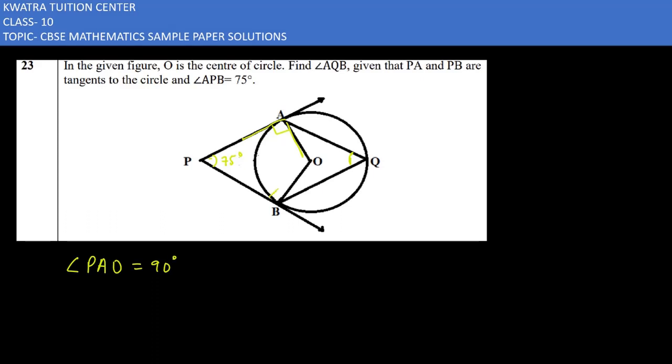The other one on the other side will be PBO. PBO value is 90 as well. The angle between radius and tangent is 90 degrees.